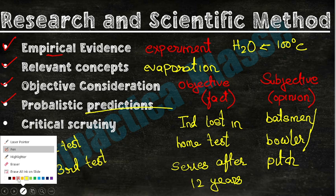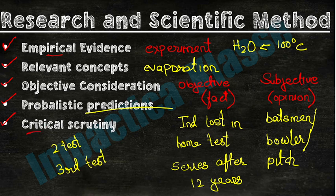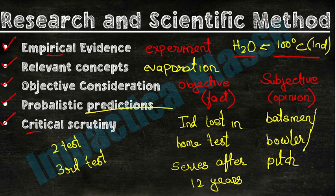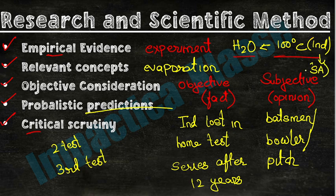Now comes critical scrutiny. When a research paper is published, it is reviewed by many people. Everyone in the world can see your paper; it will be reviewed and all the theories you give will be tested. For example, if a researcher in India finds that water boils at 100 degrees Celsius, and another researcher in South Africa does the same experiment, he has to get the same result. That is critical scrutiny — a finding is critically examined by researchers all over the world.